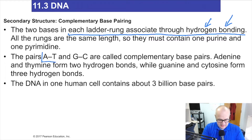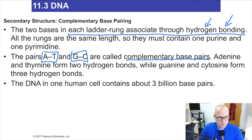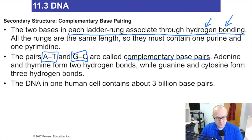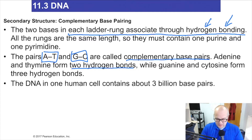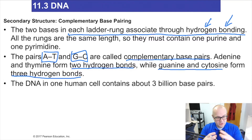Adenine-thymine and guanine-cytosine are complementary base pairs — they hydrogen bond very well together. Adenine and thymine form two hydrogen bonds, while guanine and cytosine form three hydrogen bonds. So there's a lot of attraction between these molecules, and that's what holds DNA together — which is fascinating.